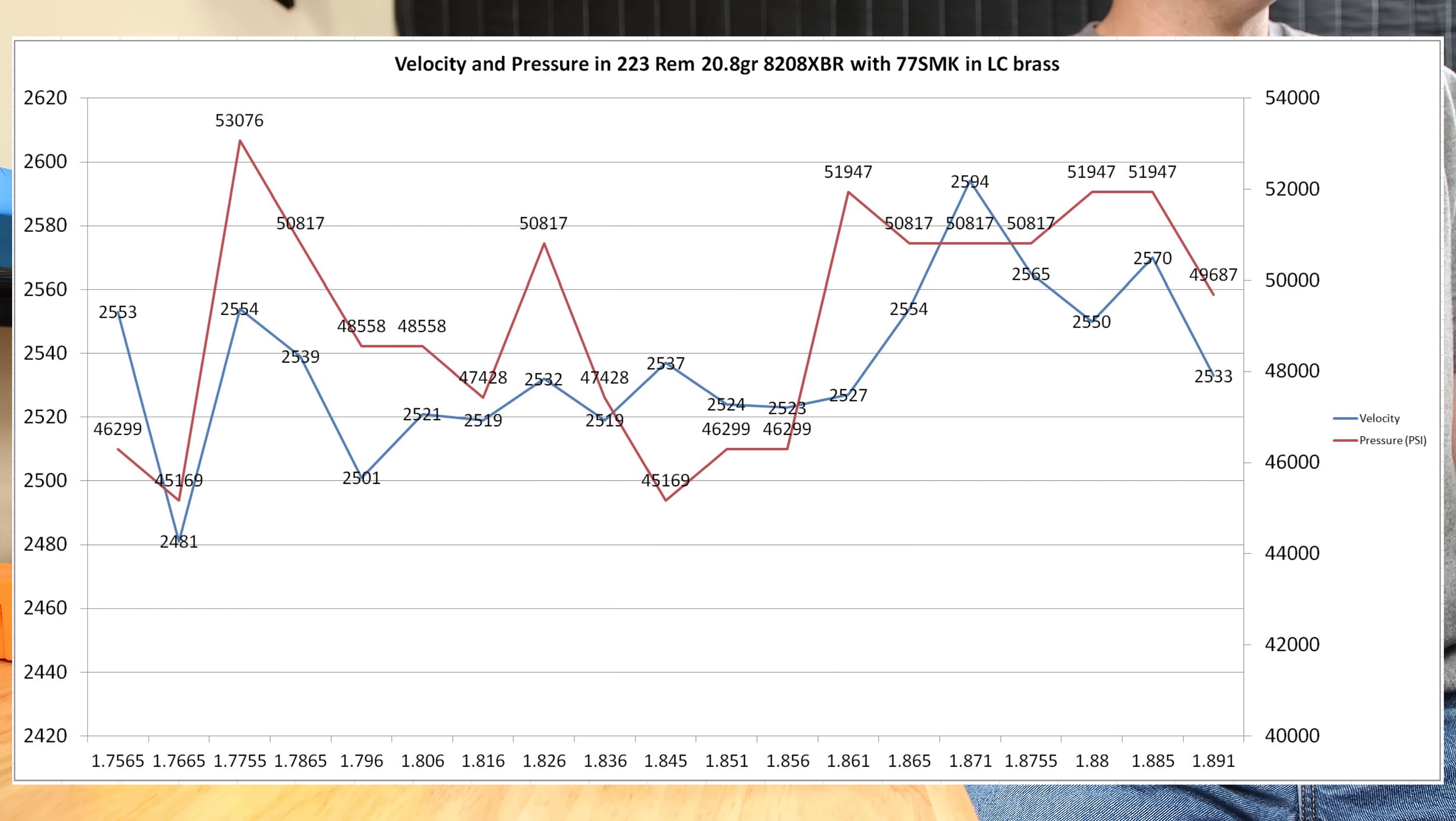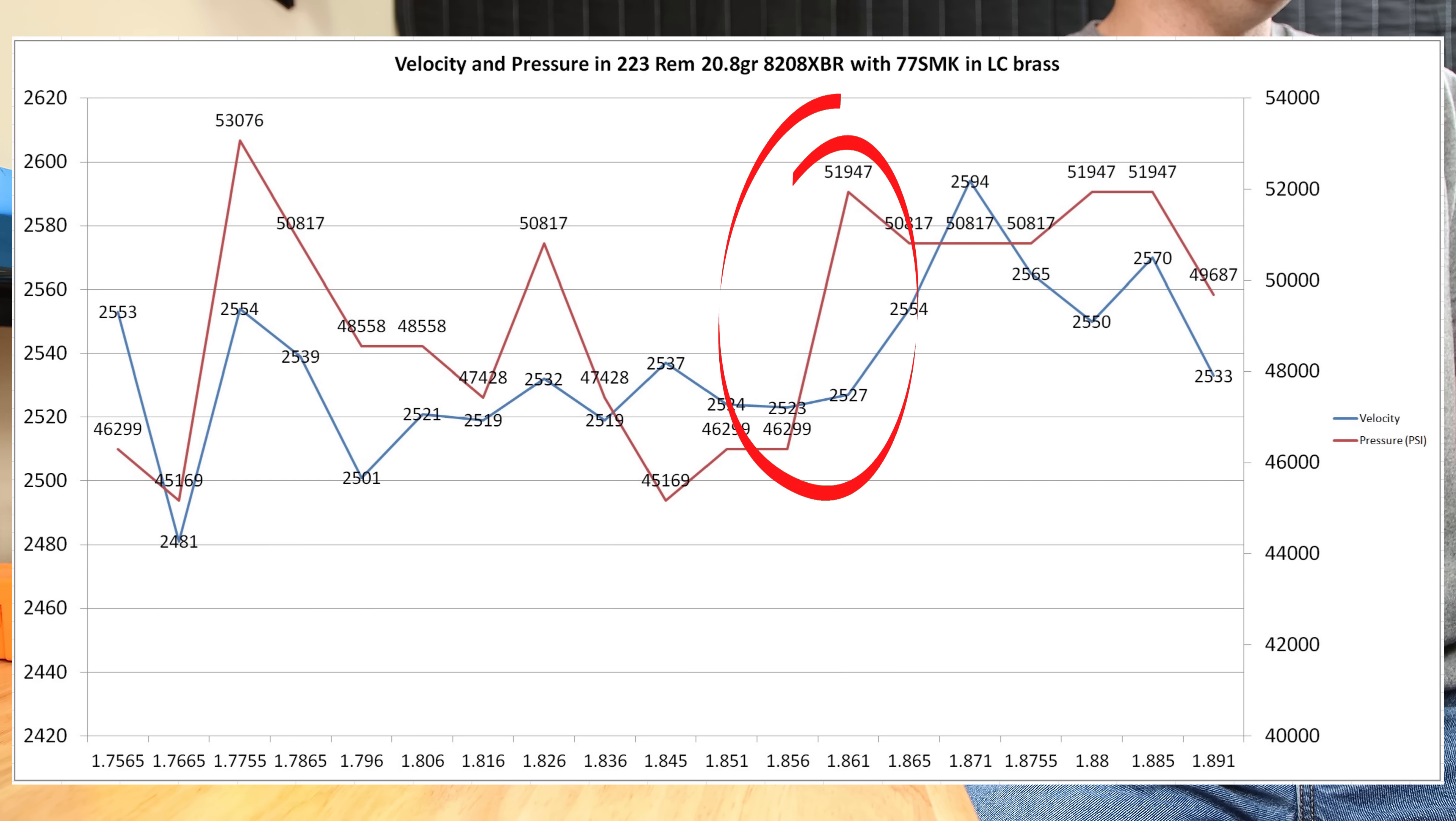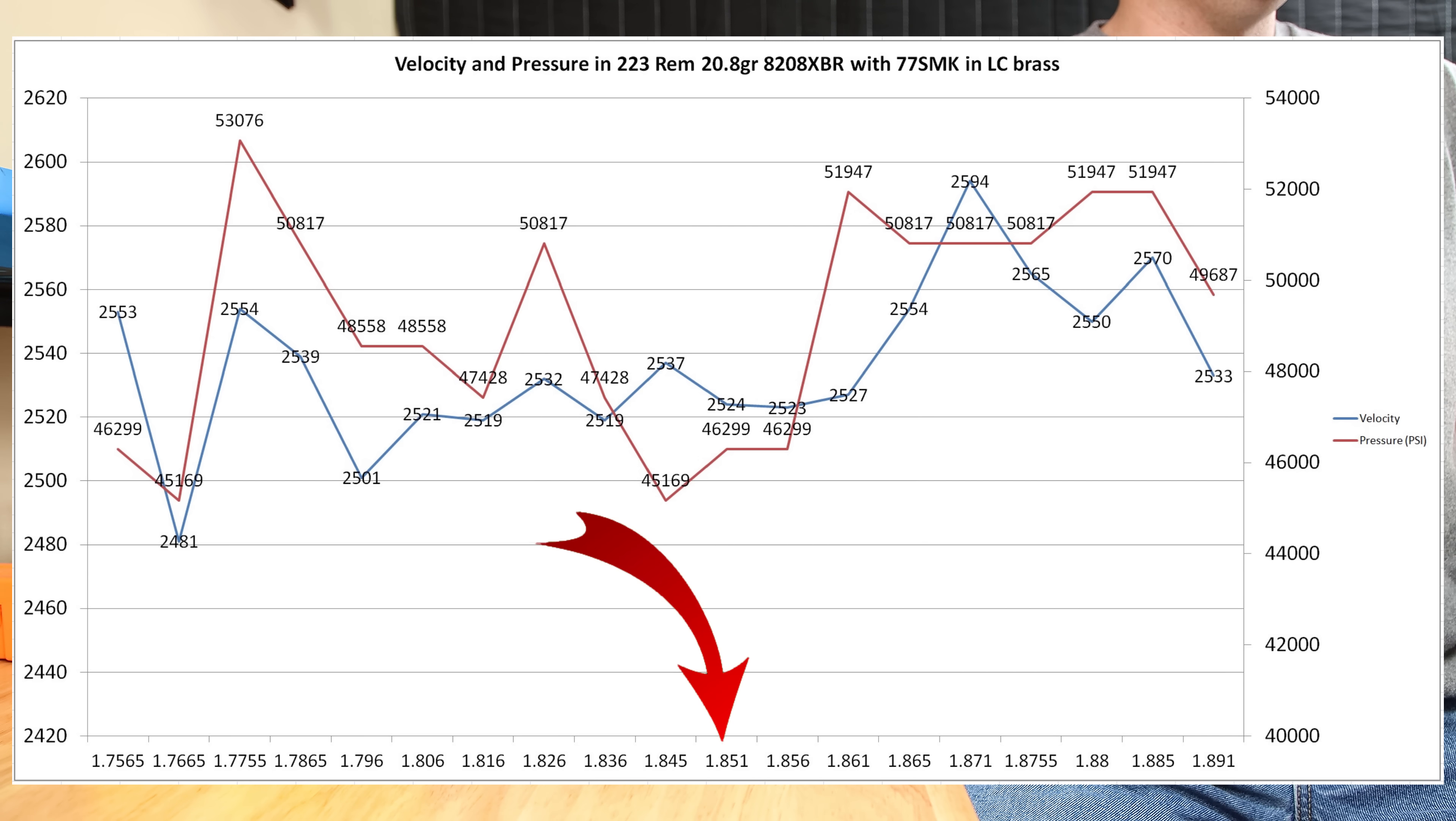But looking strictly at the pressure data, I don't think we really start to see any interesting difference until we're about 10 thousandths into the lands. The initial distance between samples on this chart was moving in 10 thousandths increments, and then after I'd calculated we'd hit the lands, we started moving in 5 thousandths increments.